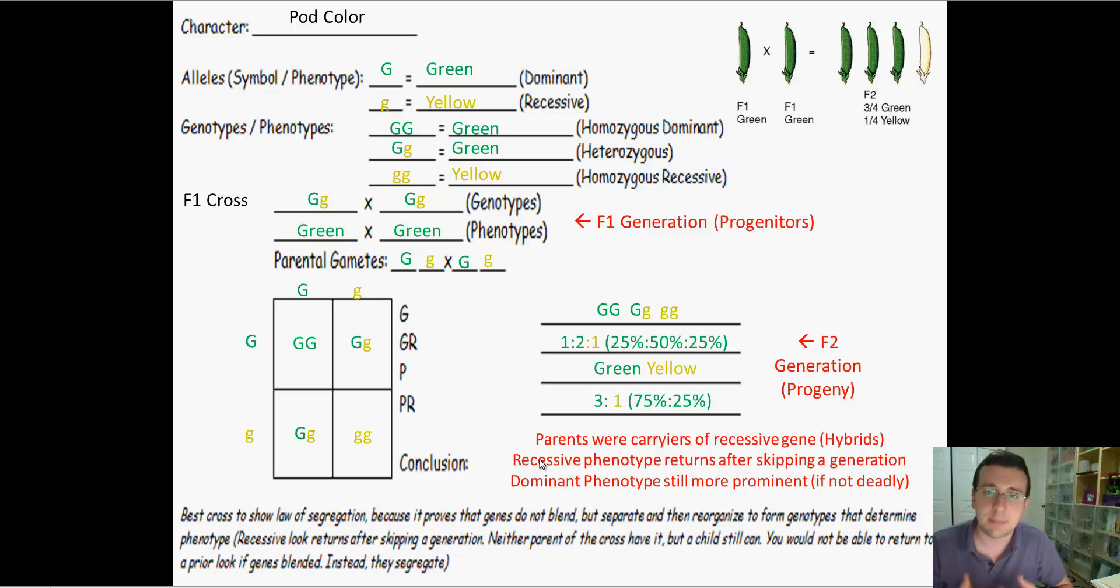So traits that typically skip a generation are going to be recessive traits. When you see a pedigree and you see a trait that's skipping a generation, you're going to know it's recessive. You're never going to be able to return to a blended look if it wasn't particle genetics. This cross is the best cross to prove the law of segregation. That's the F2 cross. We talked about the true breeding cross, the parental cross, and the F1 cross. And now we have the F2 cross to finish it up.